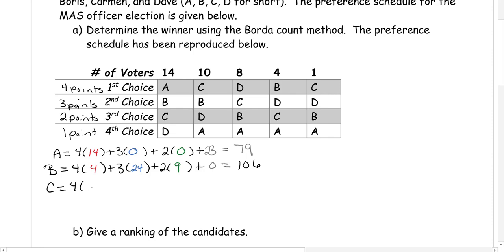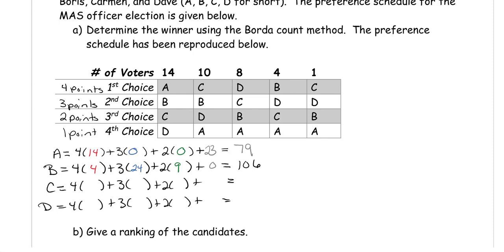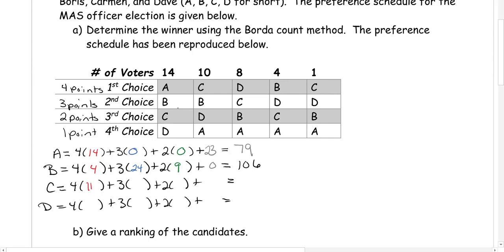Now finishing up with candidates C and D. Candidate C had 11 first place votes, 8 second place votes, 18 third place votes, and 0 last place votes. So we take 4 times 11, plus 3 times 8, plus 2 times 18, and that gives a total of 104.